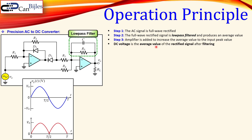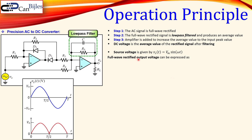The DC voltage is the average value of the rectified signal after filtering. The source voltage, or input voltage, is given in general by Vm × sin(ωt), where Vm is the amplitude and ω is the radian frequency. The full-wave rectified output voltage can be expressed mathematically as the absolute value of Vs.